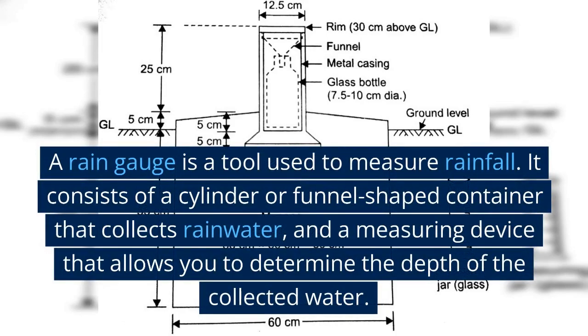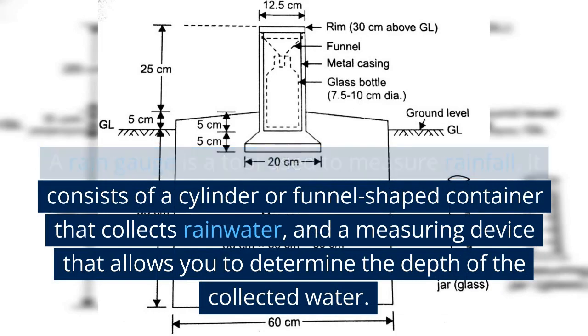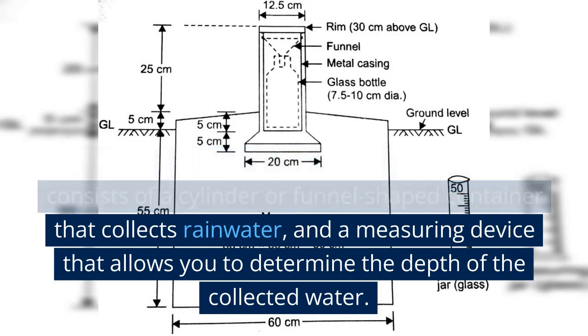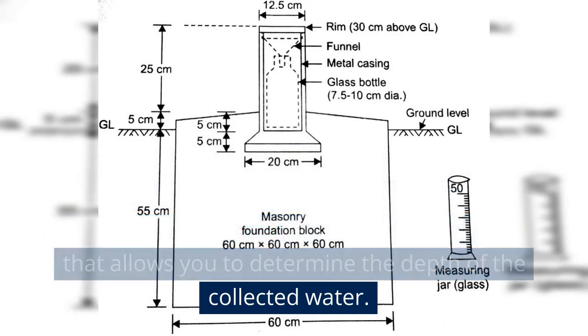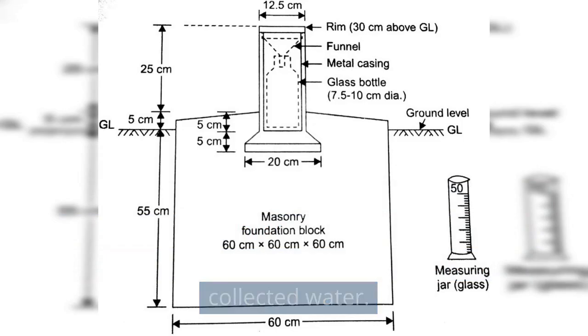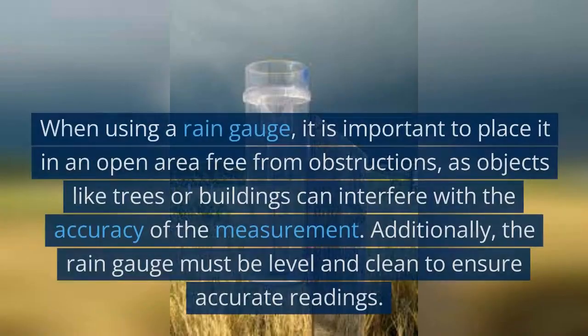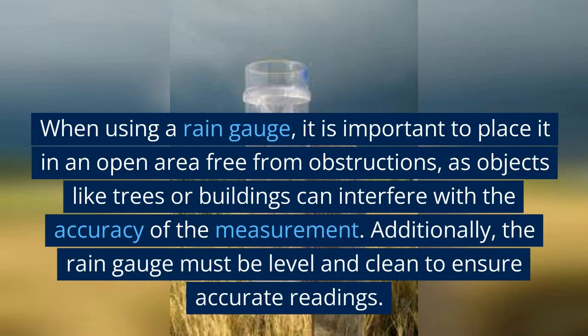A rain gauge is a tool used to measure rainfall. It consists of a cylinder or funnel-shaped container that collects rainwater, and a measuring device that allows you to determine the depth of the collected water. When using a rain gauge, it is important to place it in an open area free from obstructions, as objects like trees or buildings can interfere with the accuracy of the measurement.